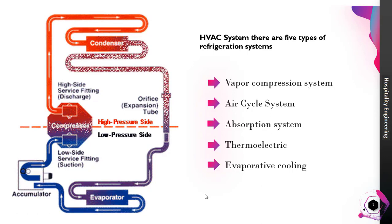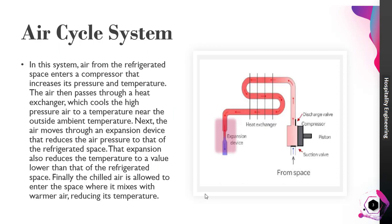Now we will move into the Air Cycle System. This type of system is only possible in aircraft. There is a reciprocating compressor where the piston moves up and down. While the piston moves to the right, section one opens and air enters inside. Then the piston moves to the left and compresses the air. This gas goes to the heat exchanger, then to the expansion device, and that cold air is used directly for space cooling purposes.